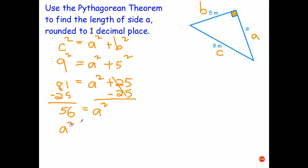Take the square root of both sides. Squaring and square root cancel out. And there's my exact answer. A is equal to the square root of 56.